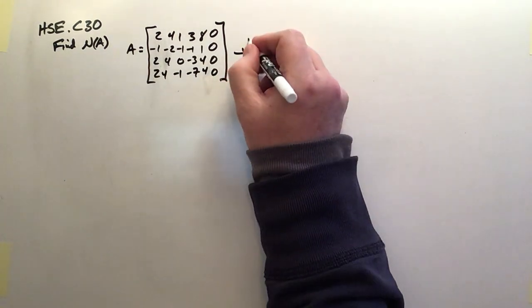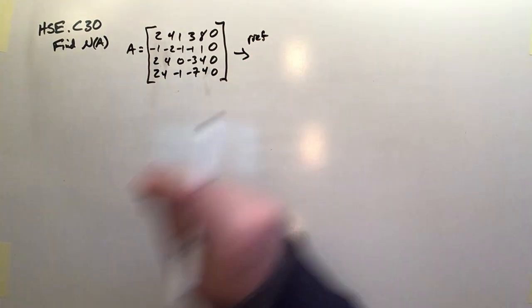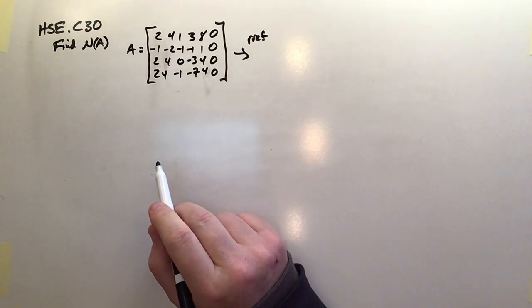And then, of course, I need the R ref for this guy. So what does this look like once I put it in reduced row echelon form? Well, here's what it looks like.